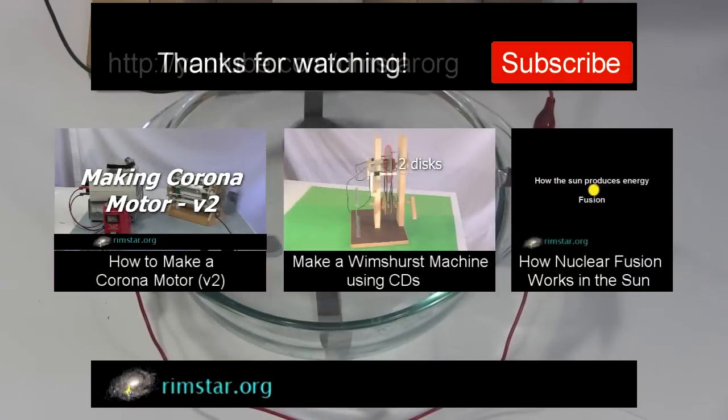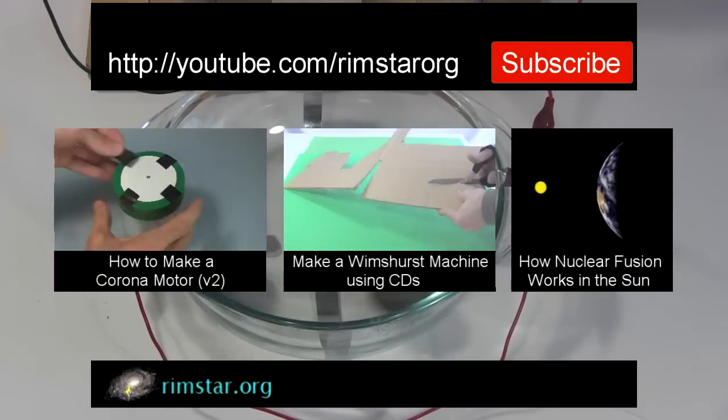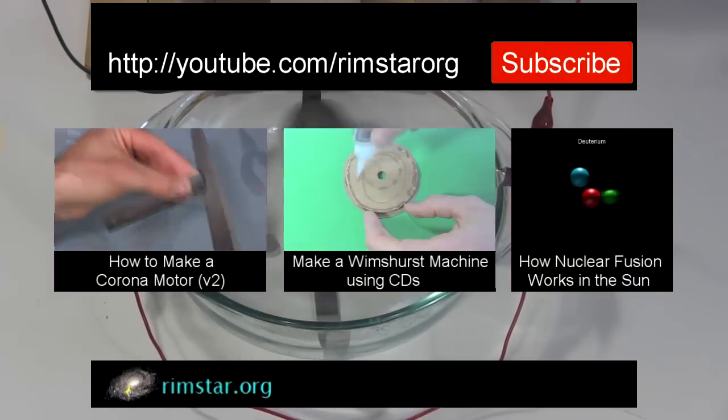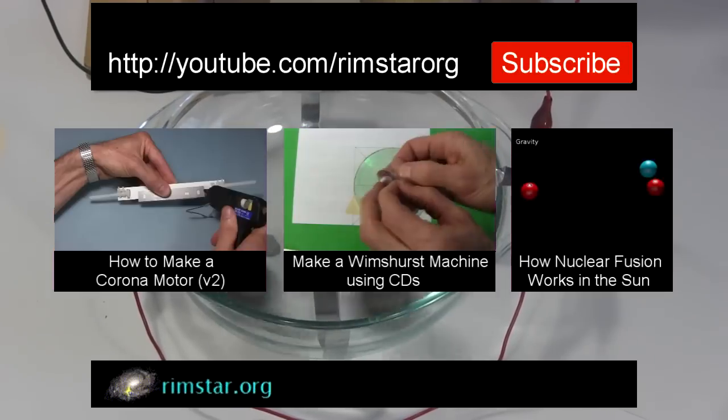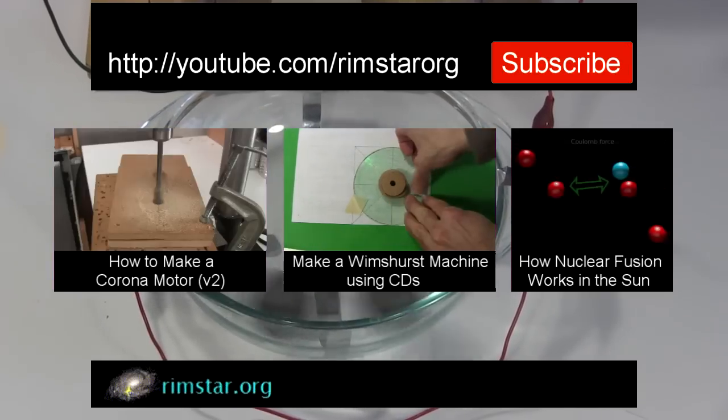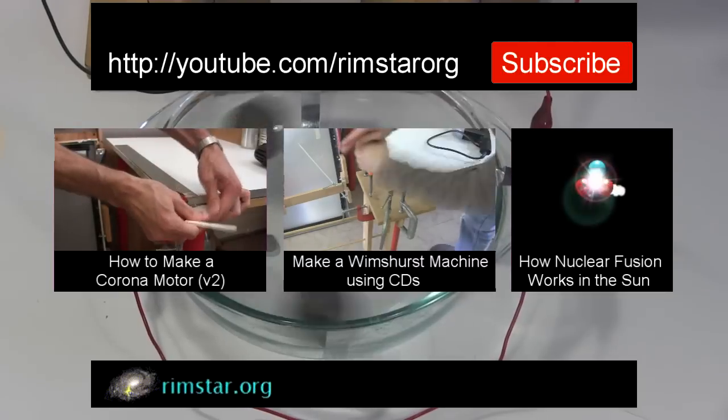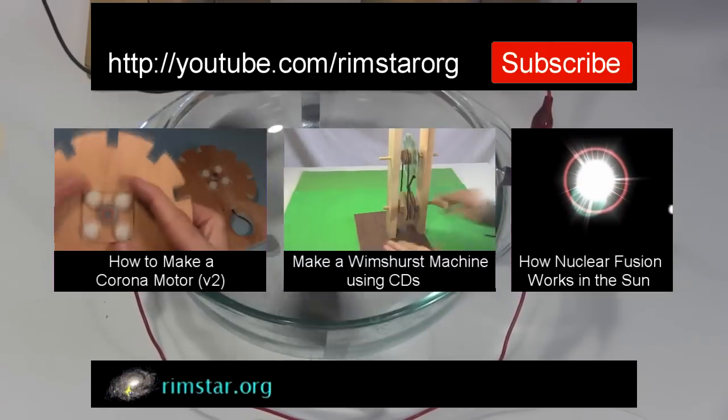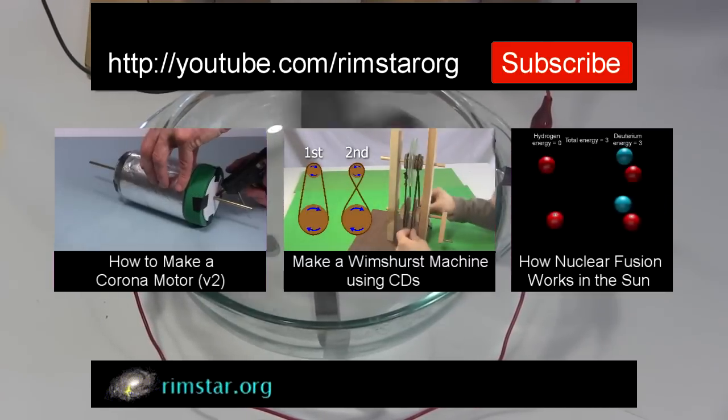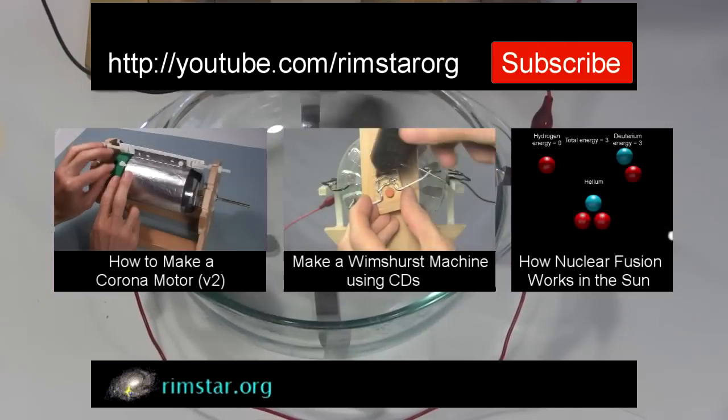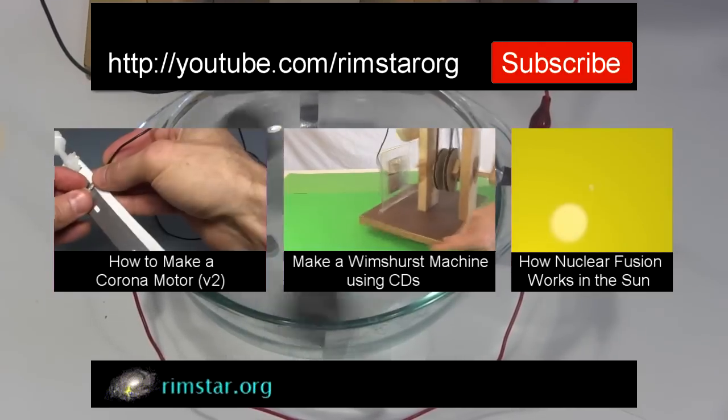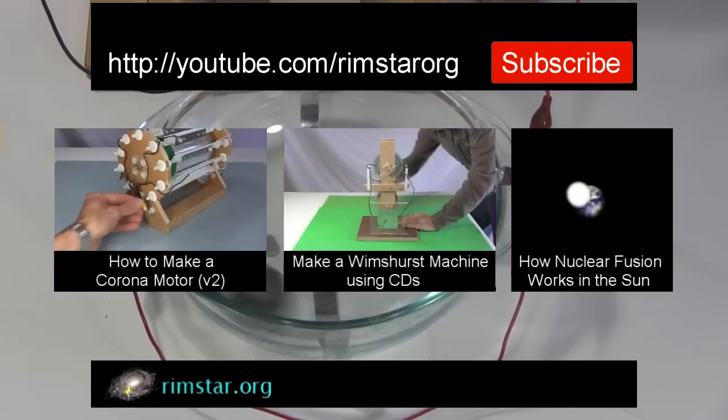Well thanks for watching. See my YouTube channel Rimstar Org for more neat videos like this. That includes one on how to make a corona motor, another neat electrostatic machine. One on how to make your own small Wimshurst machine using CDs. And for variety, one on how nuclear fusion works in the sun. And don't forget to subscribe if you like these videos, or give a thumbs up, share with your social media, or leave a question or comment below.